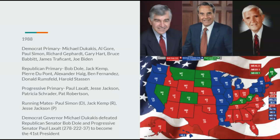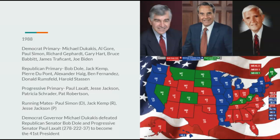Going on to 1988, Democrats would nominate Michael Dukakis, Republicans Bob Dole, and Progressives Paul Laxalt — the father of Adam Laxalt. Running mates: Democrat Paul Simon, Republican Jack Kemp, and Progressive Jesse Jackson, which actually hurts Laxalt's campaign since Jackson is seen as too radical. Democrat Governor Michael Dukakis would defeat Republican Senator Bob Dole and Progressive Senator Paul Laxalt, 278 to 222 to 37, to become the 41st President.